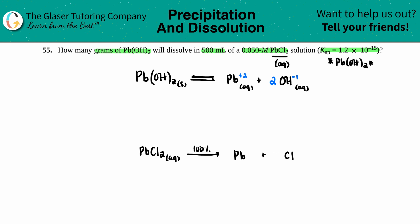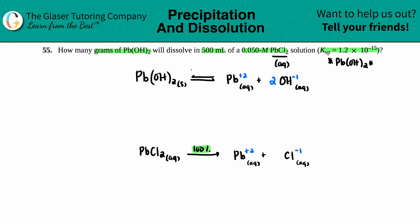Pb is +2 and the halide Cl is −1, both aqueous. Since PbCl₂ dissolves 100%, we use mole ratios for concentrations. The solid Pb(OH)₂ is not 100% — it comes to equilibrium. So we have 0.050 M initial Pb²⁺. Balancing PbCl₂ → Pb²⁺ + 2 Cl⁻ confirms a 1:1:2 ratio.